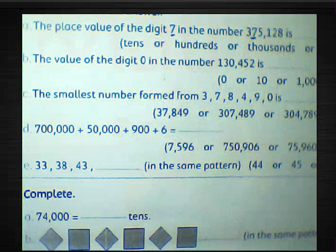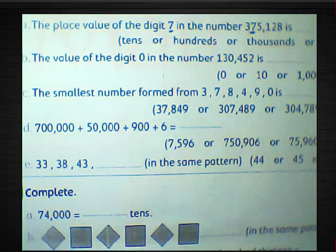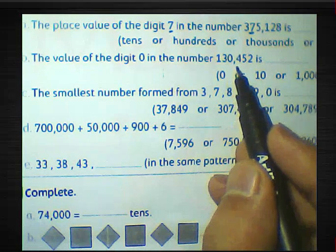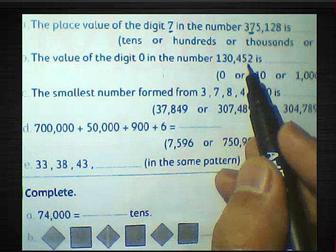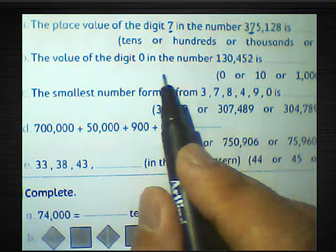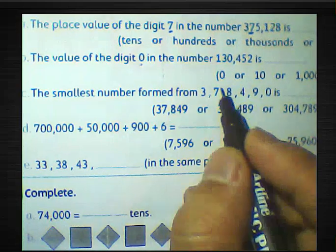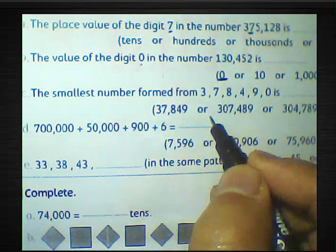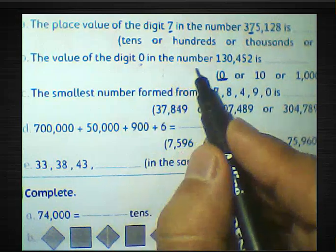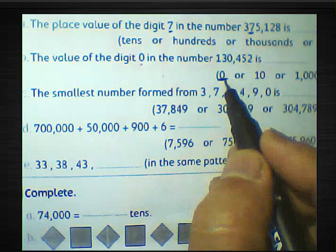Part B: the value of the digit 0 in the number 130,452 is. We know the value of the digit 0 in any number will be 0. So the value of the digit 0 in the number 130,452 is 0.